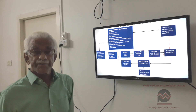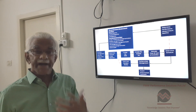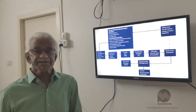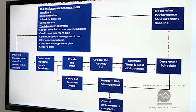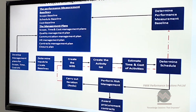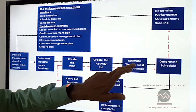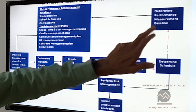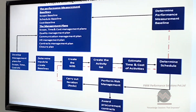The risk management process impacts the schedule, and the final output is the performance measurement baseline — for the schedule as well as for the cost. The three together — scope, time, and cost baselines — are called the performance measurement baseline.